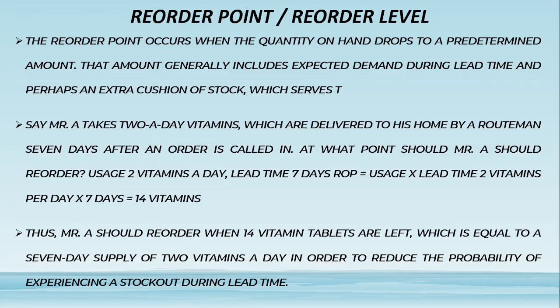Reorder Point (or Reorder Level): The reorder point occurs when the quantity on hand drops to a predetermined amount. That amount generally includes expected demand during lead time and perhaps an extra cushion of stock. For example, Mr. A takes two vitamins a day, which are delivered to his home by a route man seven days after an order is called in.